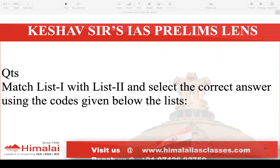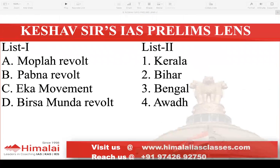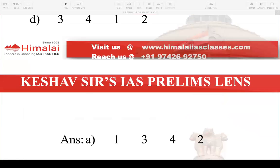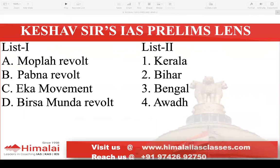Next question: Match List 1 with List 2. A. Moplah Revolt – Kerala. B. Pabna Revolt – Bihar. C. Ekha Movement – Bengal. D. Birsa Munda Revolt – Awadh. The Moplah Revolt was mainly in Kerala. The Pabna Revolt was in Bengal. The Birsa Munda Revolt was in the Bihar region. The Ekha Movement was in Awadh. So if you match them accordingly, the answer is 1, 3, 4, 2.